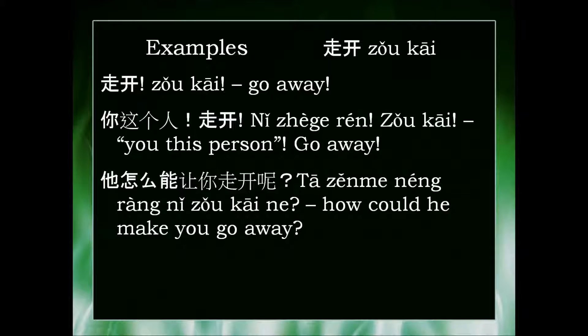The second example is 你这个人走开. So 你这个人 is directly translated as 'you this person', but it's basically an offensive thing to say to someone. It doesn't really make sense in English, but it's an offensive expression — 你这个人, 'you this person'. 走开, 'go away'.